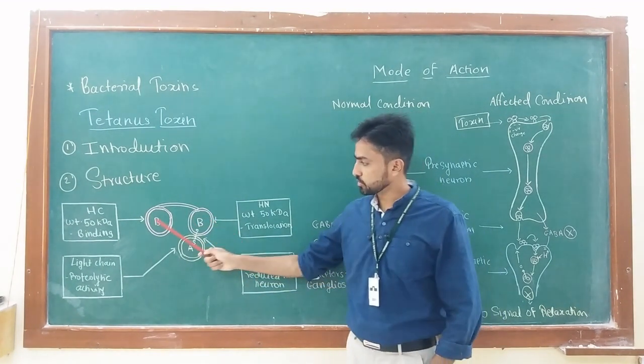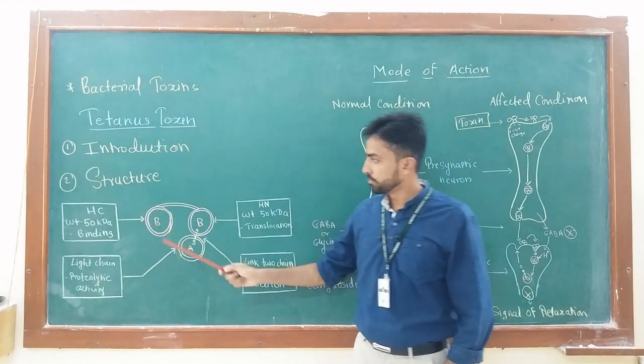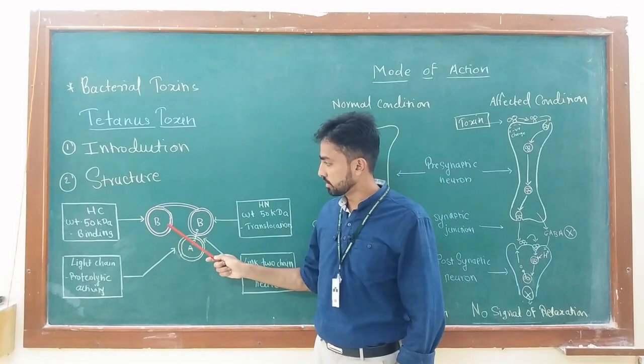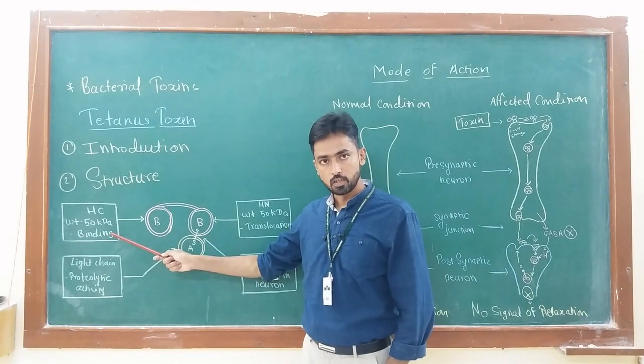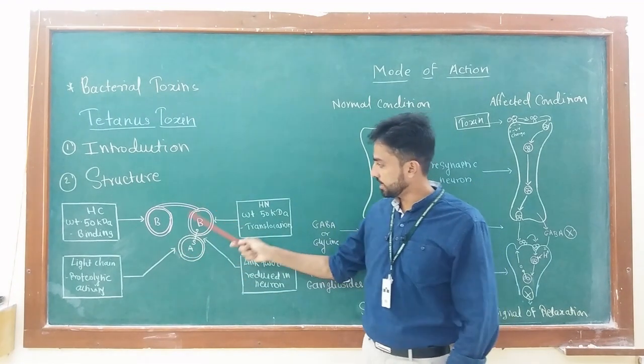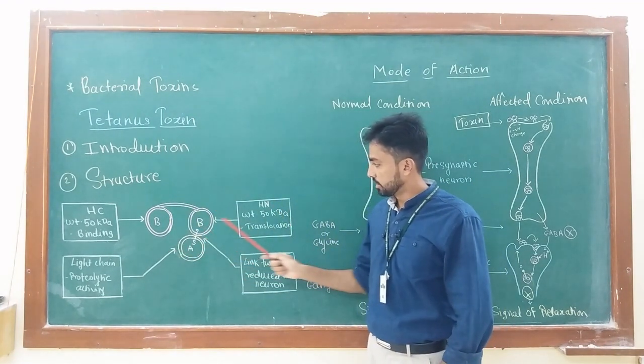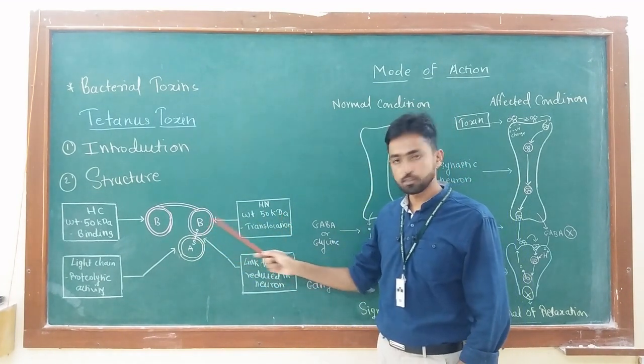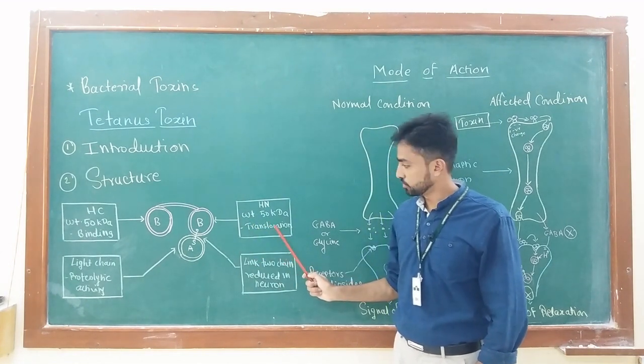The B subunit of the toxin has two different components. The first part of the B subunit is called HCC. This part is responsible for binding of the toxin to the neurons on the membrane. Now the second part of the B subunit is called HN. This part also has 50 kilodalton molecular weight. This part is responsible for translocation of the toxin inside the neurons.